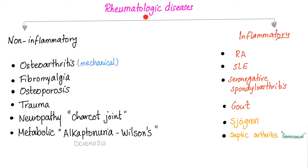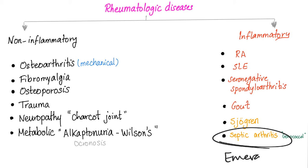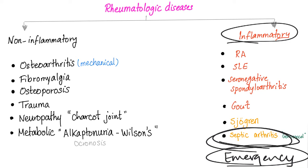Rheumatological diseases are divided into non-inflammatory and inflammatory. Why does that matter? Because septic arthritis could be an emergency. If you confuse septic arthritis, which is inflammatory, with anything less severe and less urgent, the patient can die.